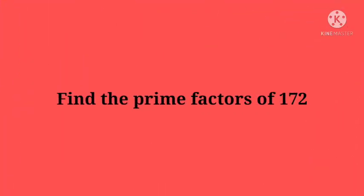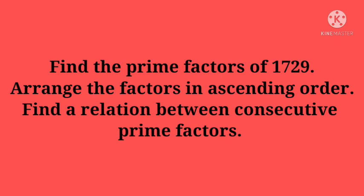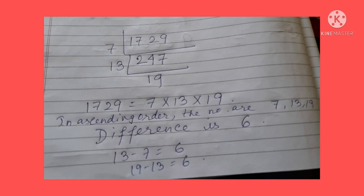Now we will discuss one more example. Find the prime factors of 1729 and arrange the factors in ascending order. Find a relation between consecutive prime numbers. At first we will divide 1729 by 7, then we will get 247. Again we will divide 247 by 13, then we will get 19. That means 1729 equals 7 × 13 × 19.